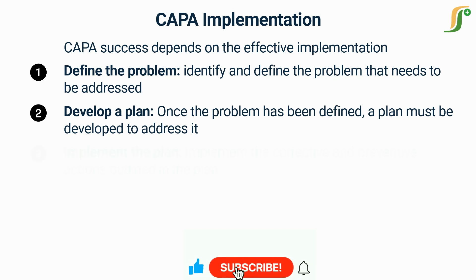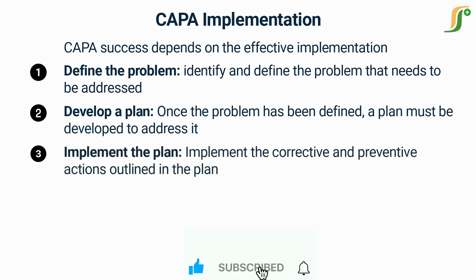The third step is to implement the plan. The next step is to implement the corrective and preventive actions outlined in the plan. This may involve making changes to processes, training employees, or other measures.